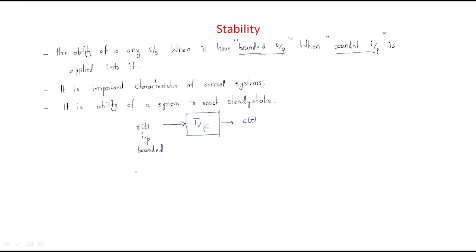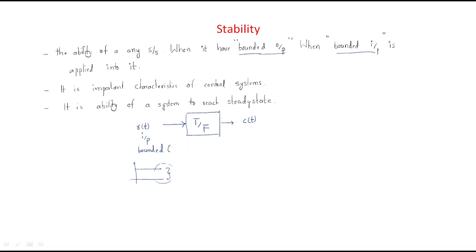This input must be bounded. Bounded means it must be defined. For example, a step input is a bounded input. We also have the ramp input — the ramp input is generally an unbounded input. Bounded means it must be defined, measurable, and not infinite. The output must also be bounded — measurable and not infinite.